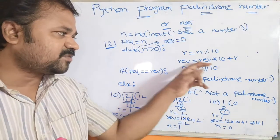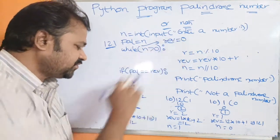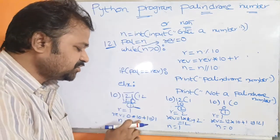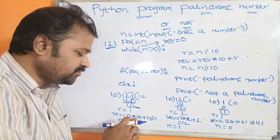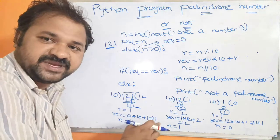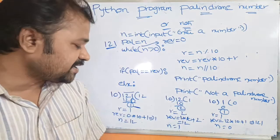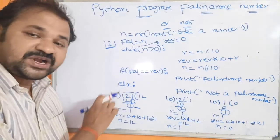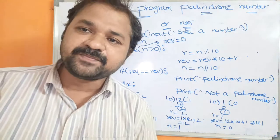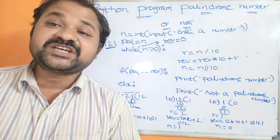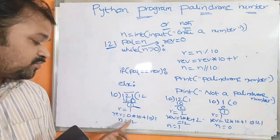The formula is: rev = rev * 10 + r. The initial value of rev is 0. So rev = 0 * 10 + 1 = 1. Now rev equals 1. Next, n = n // 10, which is 121 // 10. The integer part is the quotient, which is 12. So now n becomes 12. Control goes back to the while condition: 12 > 0 is true. r = 12 % 10 = 2. The remainder is 2.